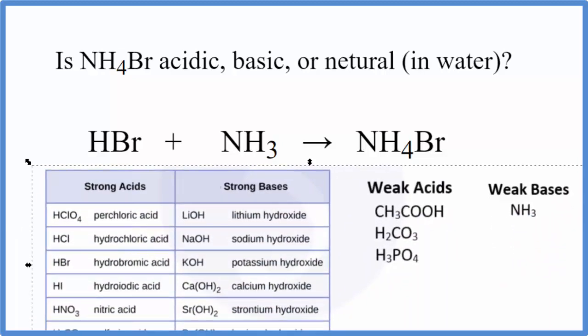So here's our table and if we look for HBr we go down and here's HBr. So it's a strong acid. I'm gonna write SA to remember that and then NH3.